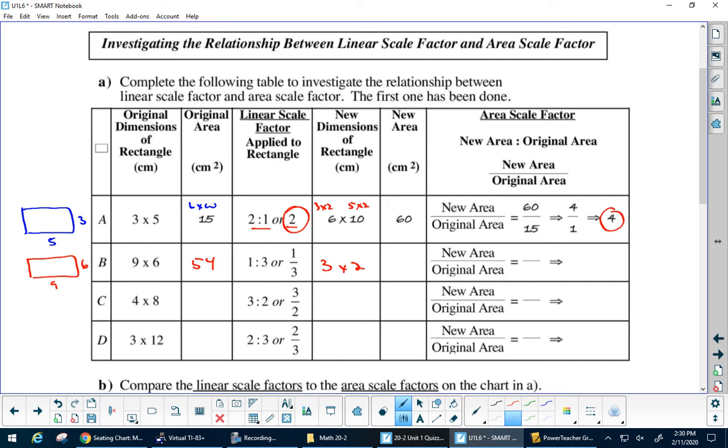So now, 3 times 2 is 6. That's my new area because I multiplied. Now remember, it always goes new over original. So I get 6 over 54. Now can someone put that into a calculator and go math, enter, enter, and tell me what it says? 1 ninth.